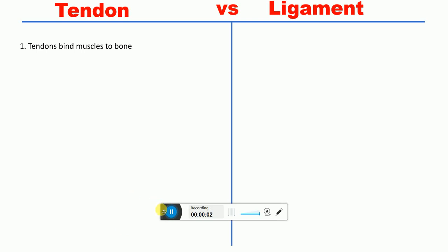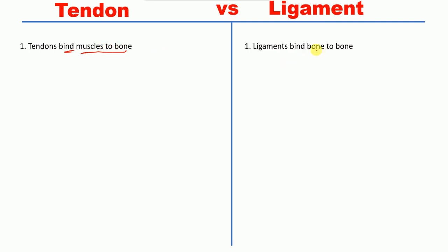Hello everyone. In this lecture today I'm going to talk about the differences between tendon and ligament. The first difference is that tendons bind muscles to the bone, whereas ligaments bind bone to bone. Here is one bone and here is another bone, so this is the ligament.